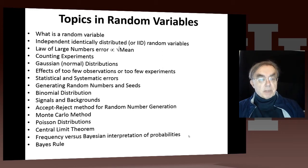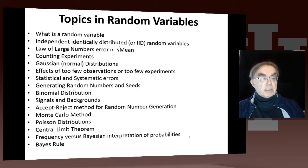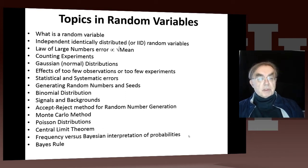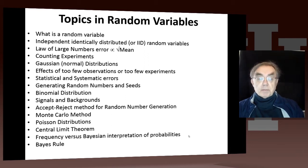We have something we've already introduced: counting experiments, which count the number of times things happen. We have important distributions — first, the Gaussian or normal distribution, which you get when you look at the distribution of the average of large numbers of independent random variables. You have important consequences of having too few observations or too few experiments — that's the statistical error side of things. We also have the systematic error or bias, which is in practice more important, because we know what to do with statistics — we just run longer. If we've got the wrong answer, it's not so obvious what to do.